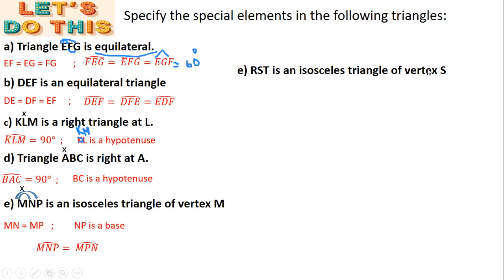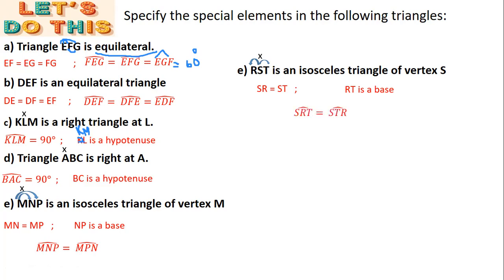Triangle RST is an isosceles triangle of vertex S, so I mark S with an X. The equal sides issued from S are SR and ST, so SR = ST. The base is RT. The two equal angles are at vertices R and T, so angle SRT equals angle STR. This exercise is very important, so please study it carefully.